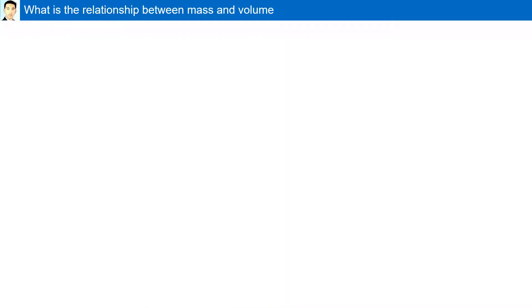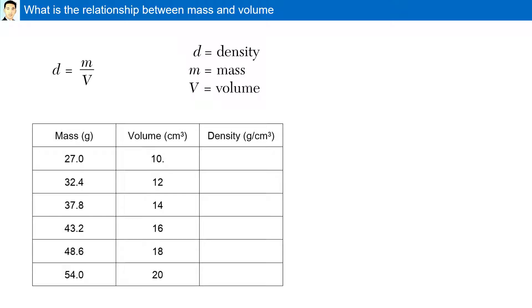What is the relationship between mass and volume? Density is equal to mass divided by volume. Here we have a data table with mass and volume for one type of substance. Inputting the mass as 27.0 gram divided by 10 centimeter cube, we have the density as 2.7 gram per centimeter cube. Calculating the density for the other data, they all equal to 2.7. The density for a substance remains constant.